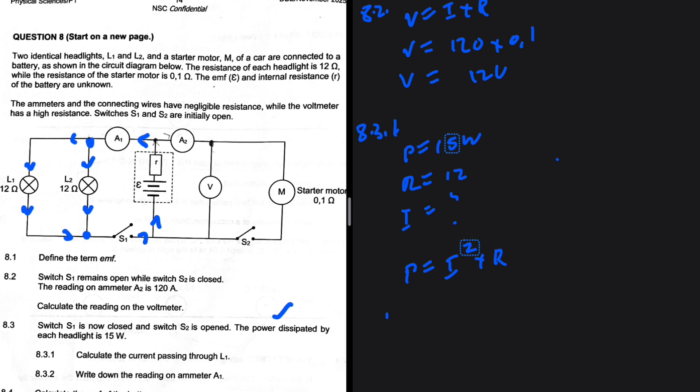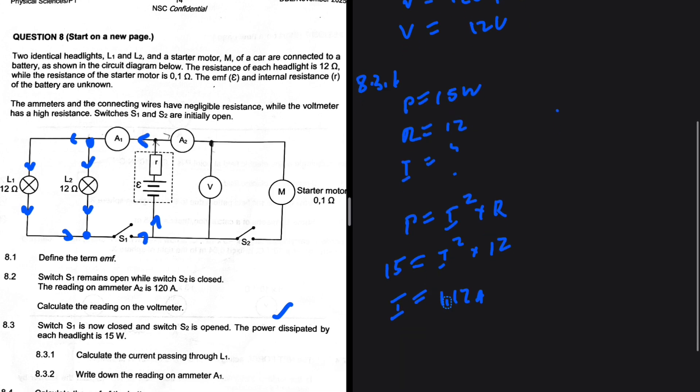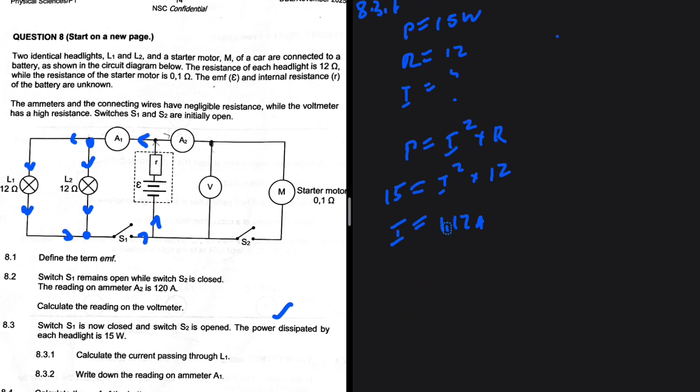Obviously P is equal to I squared multiplied by R. Very basic stuff. P is 15, current squared multiplied by R which is 12. So the current is equal to the square root of 15 over 12, which is 1.12 ampere. So that is the reading or the current passing through L1.